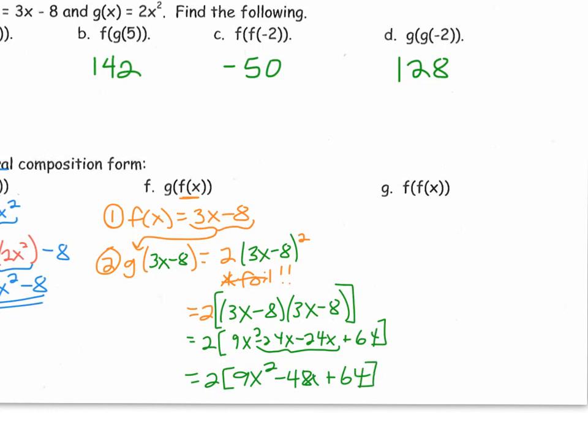That would give me 9x squared minus 48x plus 64. And now I'm going to go ahead and distribute that 2 into all my terms. The general composition of g of f of x would be 18x squared minus 96x plus 128. That would be the general composition.